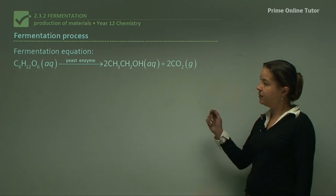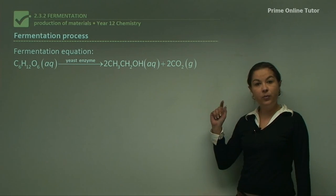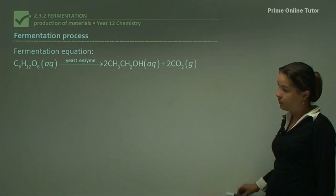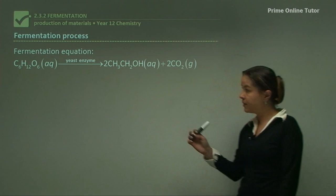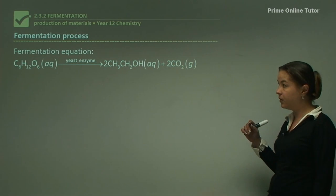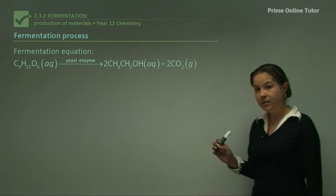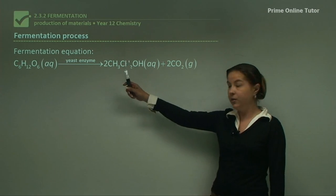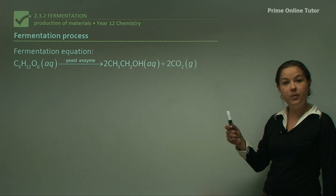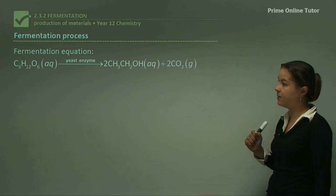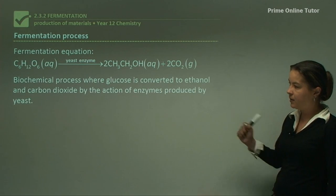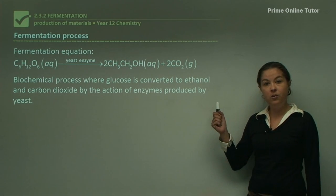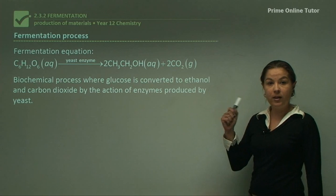Let's look at the equation for this reaction — you will have to remember this. On the left we have a molecule of glucose, which is C6H12O6, a long carbon chain molecule. With a yeast enzyme, we get two ethanol molecules and two gaseous carbon dioxide molecules. To recap: it's a biochemical process where glucose goes to carbon dioxide and ethanol, and you need yeast for this reaction to go forward.